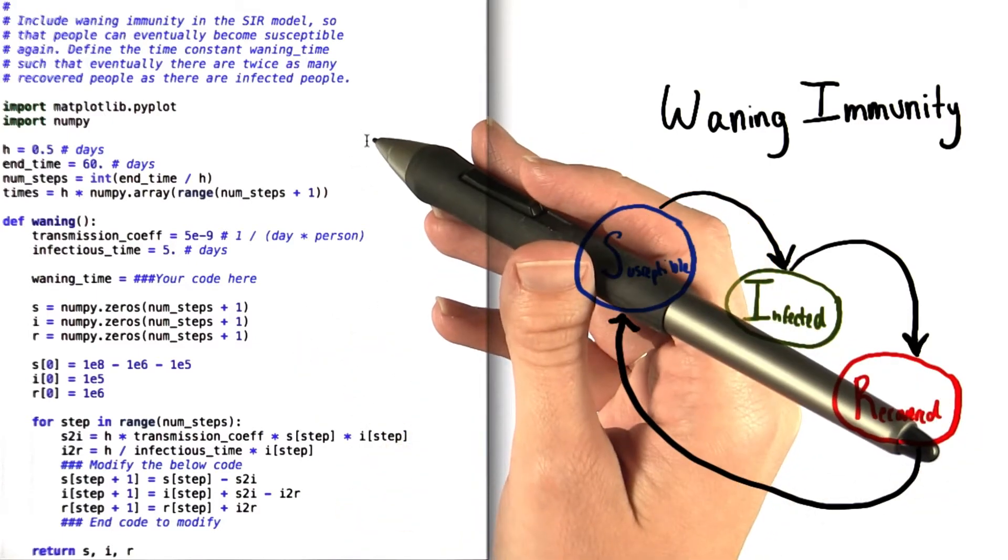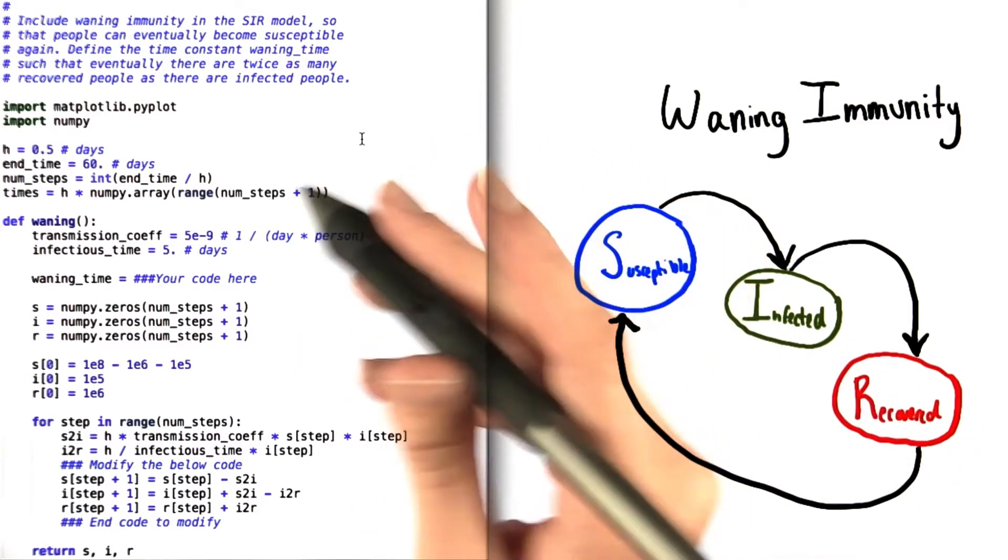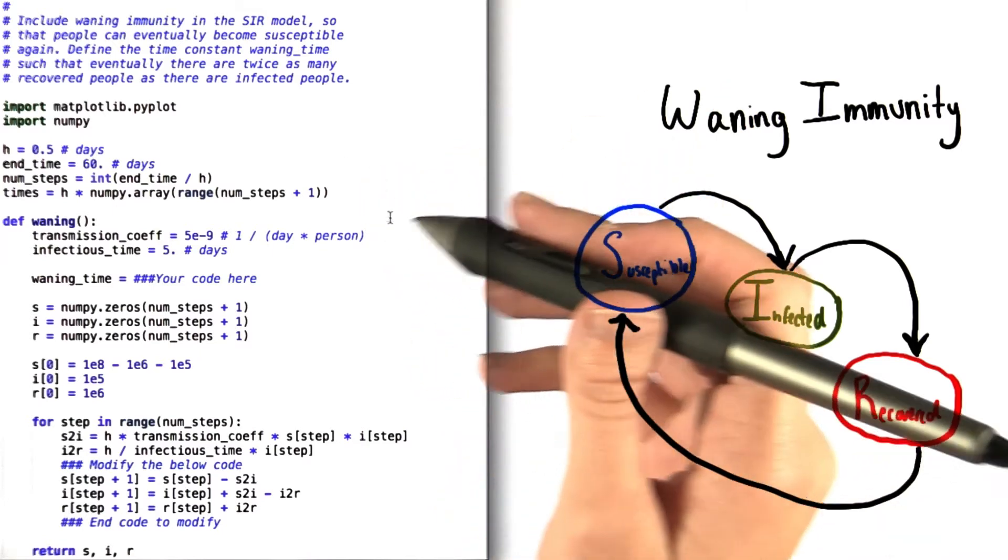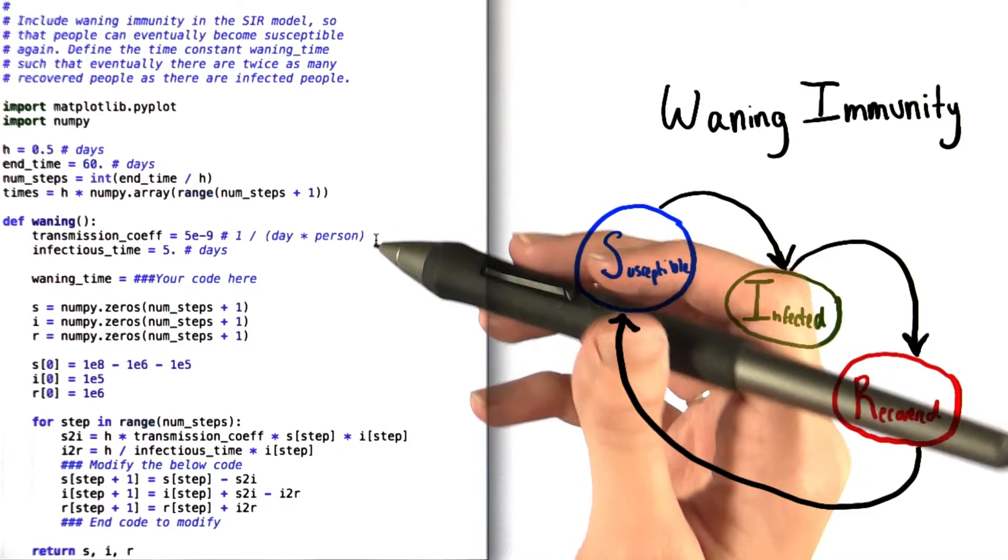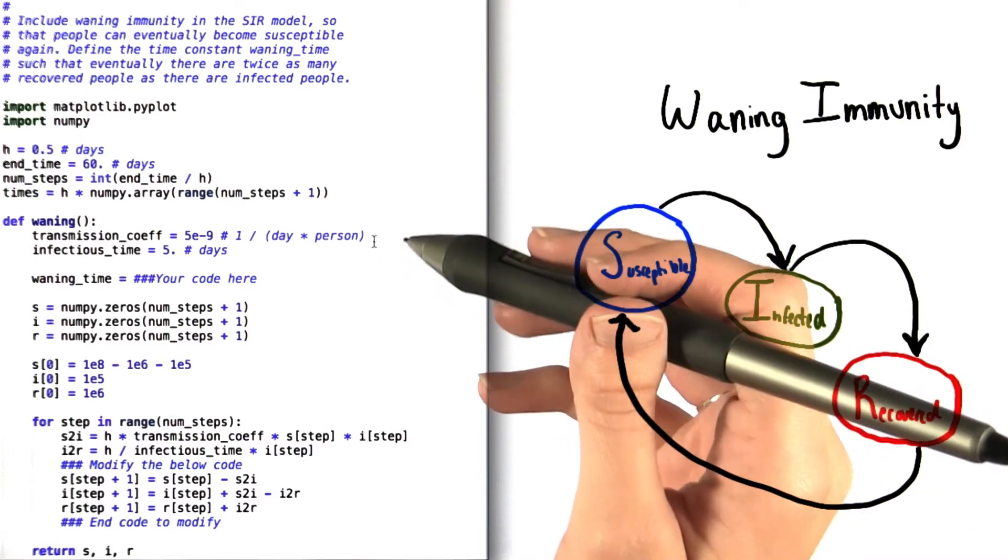Most of the information we've given you in the supply code you've seen before, but there are a couple of things that are particular to this unit. You see that we have the transmission coefficient, which is a measure of how frequently each day each infectious person might infect someone else.